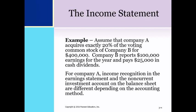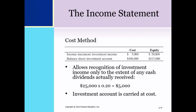In this example, we assume that Company A has acquired exactly 20% of the voting common stock of Company B for $400,000. Company B reports $100,000 of earnings for the year and pays $25,000 in cash dividends. This illustration shows the calculation of investment income and the investment account under the cost method. The income is limited to the dividends received of $5,000, and the investment account is reported at the original cost of $400,000.